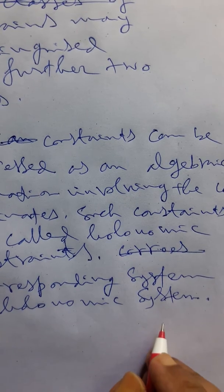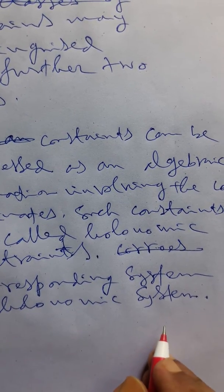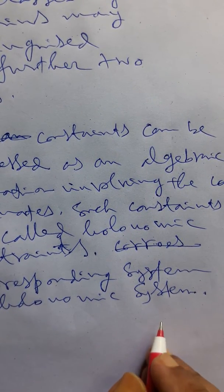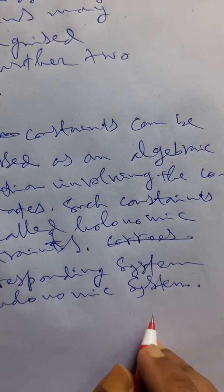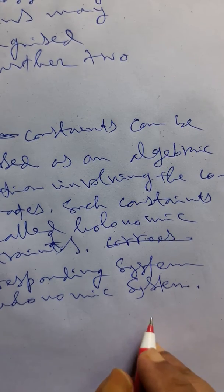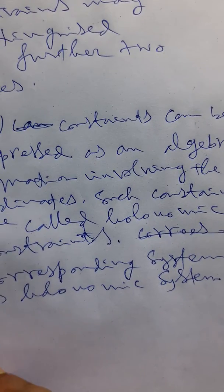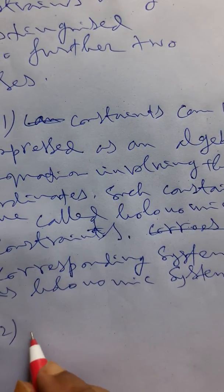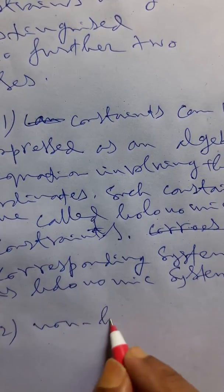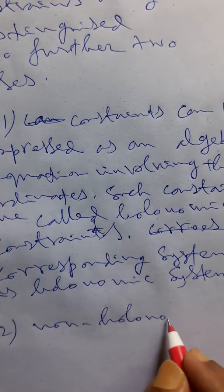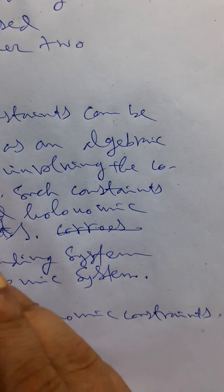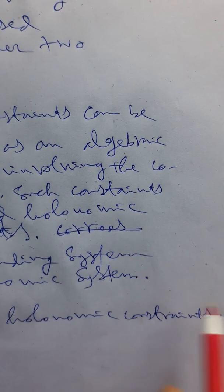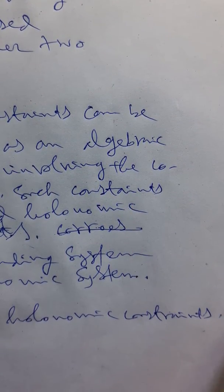Now on the other hand there exists a larger class of constants which are non-integrable in nature and subtly not expressible as an algebraic equation involving in the coordinates. Such constant is classified as non-holonomic constant, which are adverse to all conditions of holonomic constants and it is non-integrable in nature.